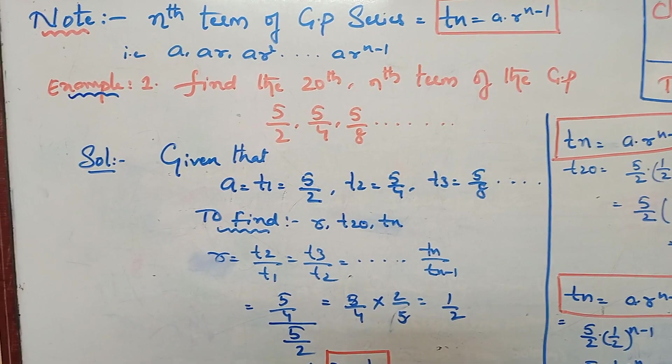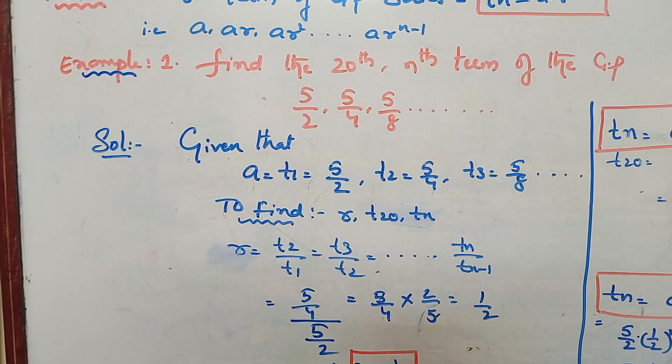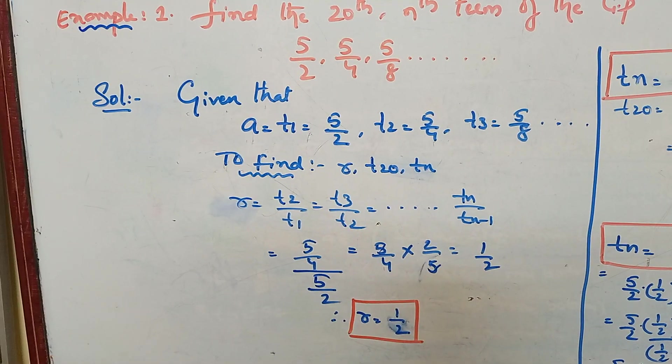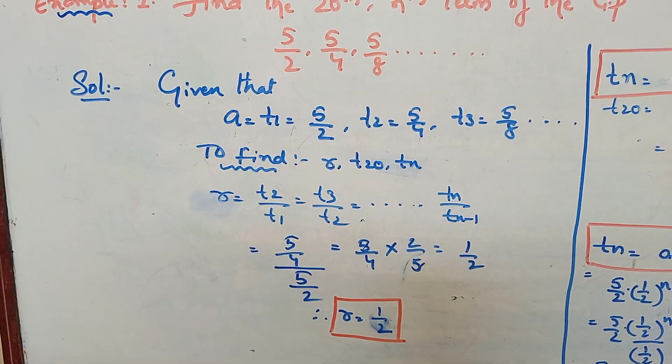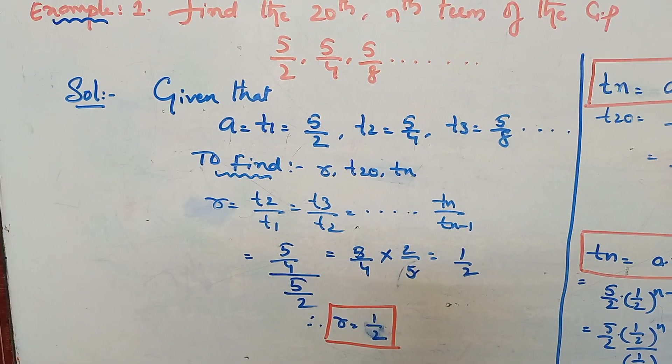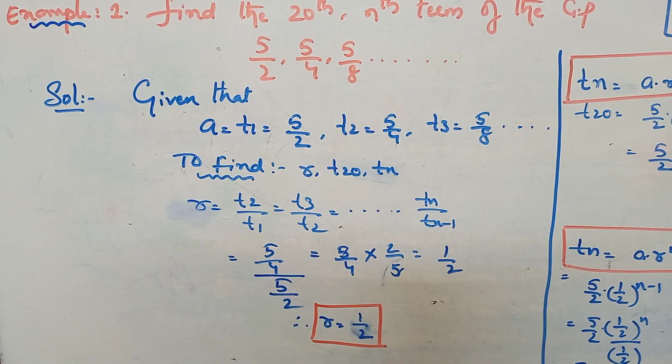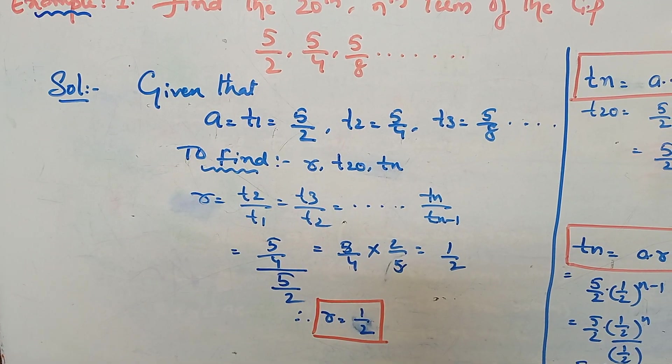What is given in the question? Given that a equals t1, that equals 5 by 2, t2 is 5 by 4, and t3 is 5 by 8. So we need to find t20, the 20th term, and nth term.